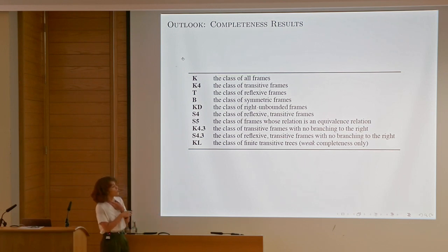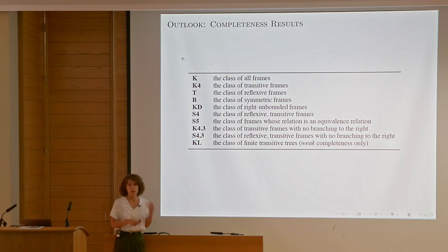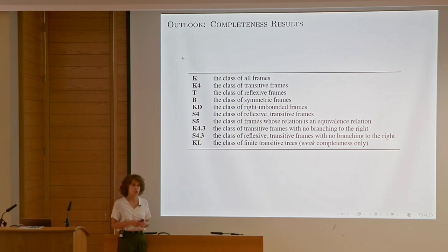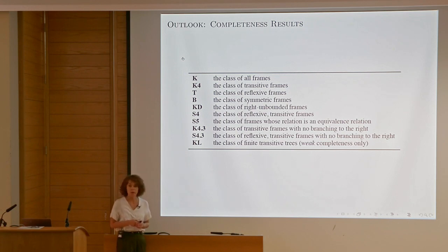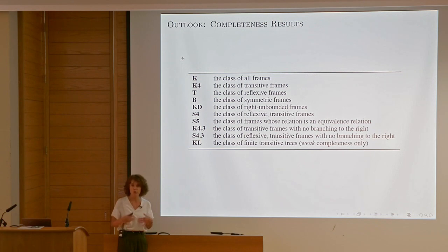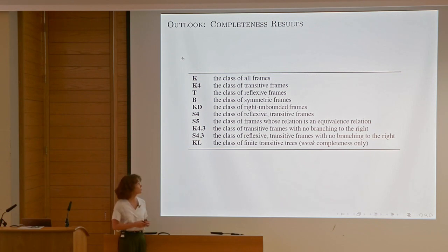The class of models can satisfy different properties of the accessibility relation, resulting in different types of modal logics. Some of them are of epistemic usefulness, some are not. Some are good for time modeling, branching time modeling; some are good for belief modeling, where you have an order instead of an equivalence.